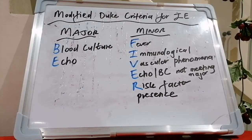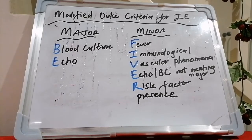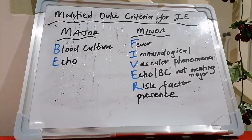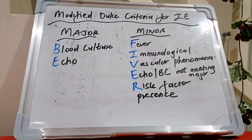After defining it according to the Duke criteria, we split treatment into community-acquired native valve endocarditis or late prosthetic valve endocarditis — more than 12 months post-surgery — versus early prosthetic valve endocarditis within 12 months post-surgery. The approach for community-acquired and late prosthetic valve endocarditis is a combination of ampicillin with flucloxacillin and gentamicin for four to six weeks. If the patient is penicillin-allergic, we use vancomycin with gentamicin.